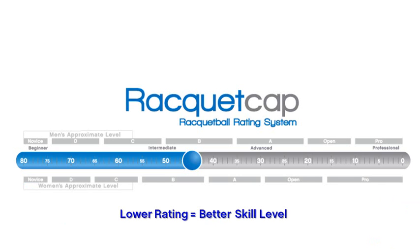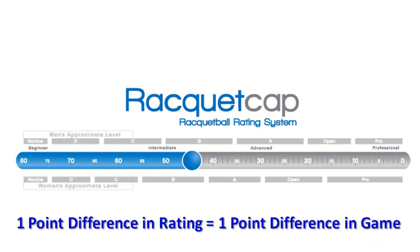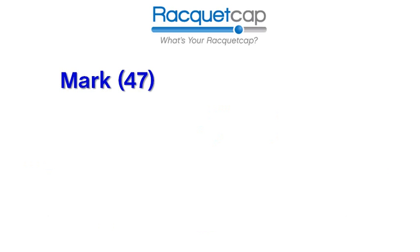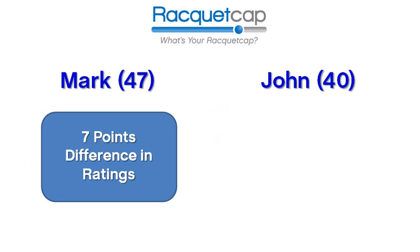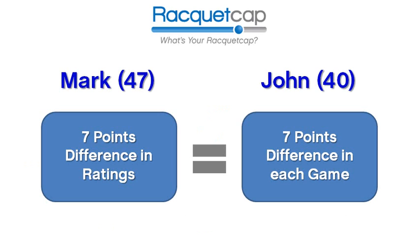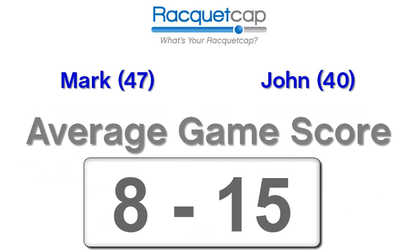The rating system is built on one key concept. Every one point difference in two players' ratings is equivalent to one point difference in each game played. For example, if Mark with a rating of 47 plays against John with a rating of 40, there are seven points difference in the two players' ratings. This equates to an average seven point difference in each game they play. The RacketCap system will therefore predict that John will beat Mark, on average, 15-8 in each game played.